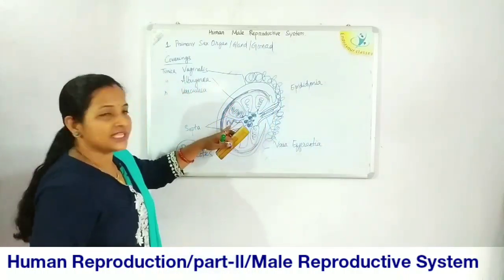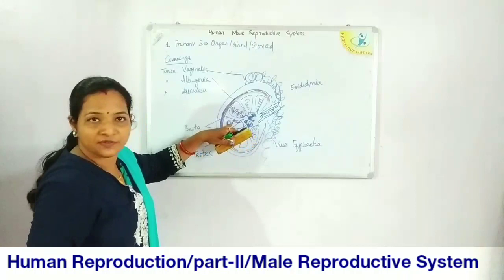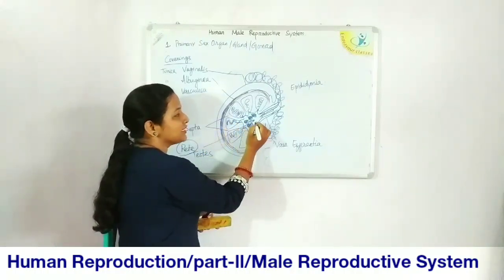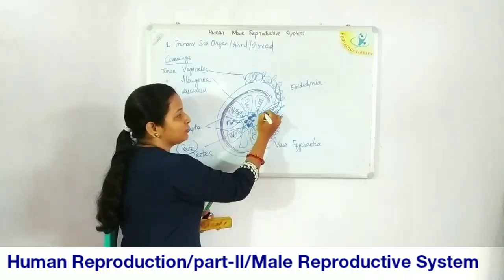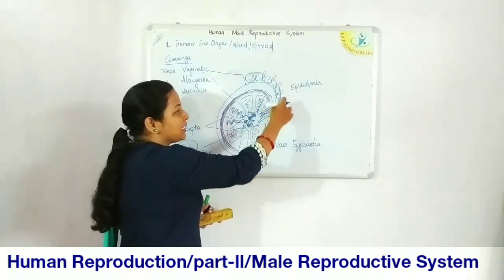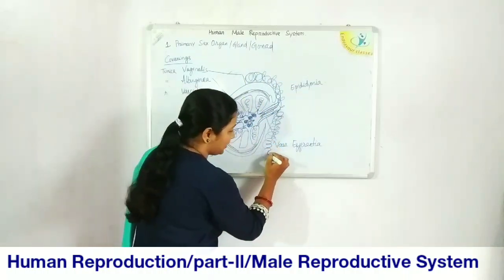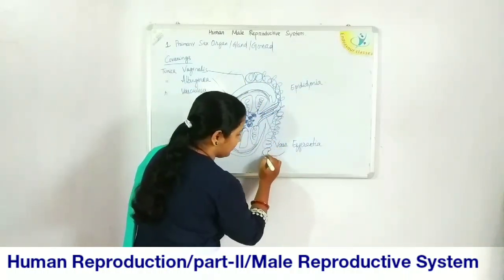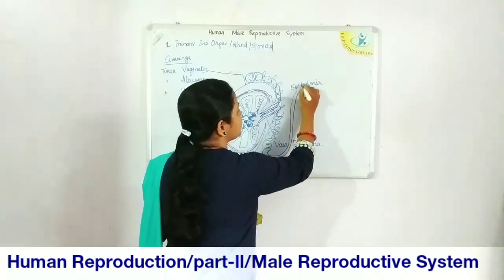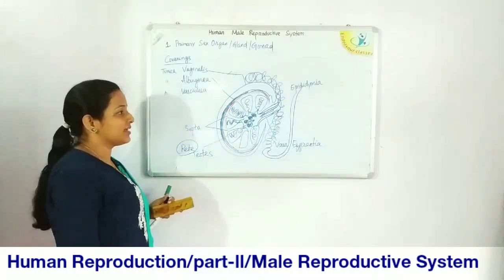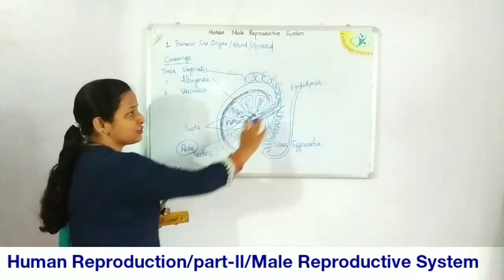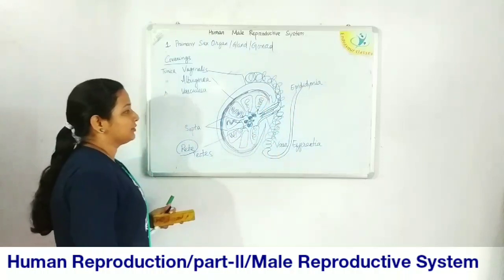So sperms are synthesized inside the seminiferous tubules, then move through the rete testis, then through the vasa efferentia, then through the epididymis. From the epididymis, another tube arises called the vas deferens. We will study those structures in more detail later.